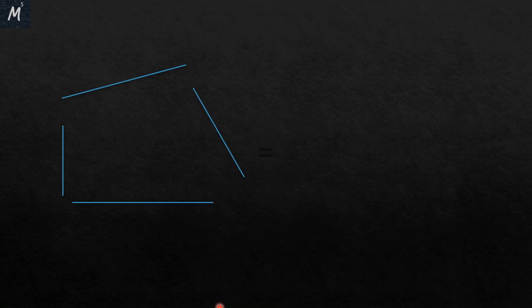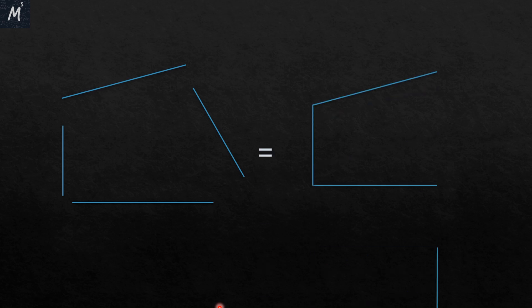In this video, we are going to learn about quadrilaterals. So let us first understand what is a quadrilateral. A quadrilateral is a closed figure which is made up of four line segments. So if we join these four line segments, the shape which we get is called a quadrilateral.